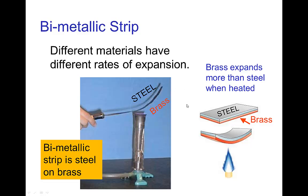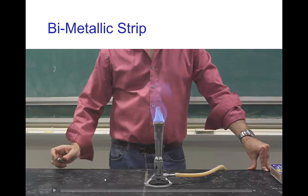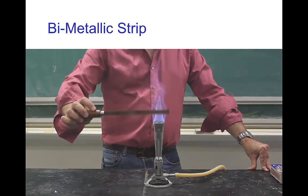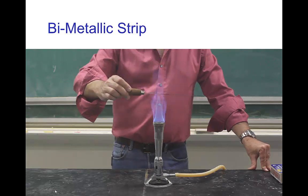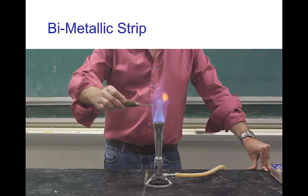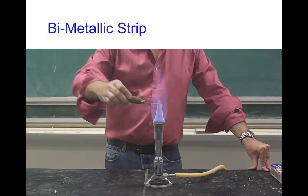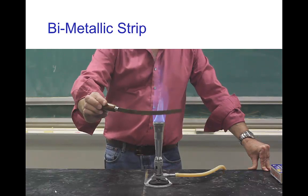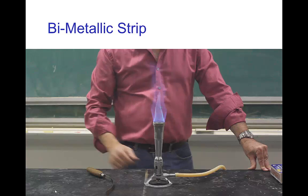With a bimetallic strip, we have a strip of steel attached to a strip of brass. The brass expands more when heated. So this bimetallic strip bends when it's heated. There's the brass, there's the steel, there's the brass again. We're going to heat it up and you can see that it's curving upward. The brass is on the bottom side, so because it expands more than the steel, the bimetallic strip bends. Even though visually it doesn't look much longer, just the difference in expansion between the brass and steel produces that bending.